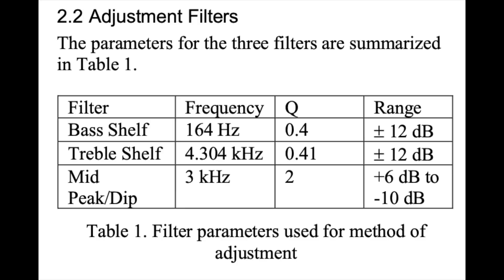The low shelf frequency is 164 hertz — pretty high — but the Q factor is extremely low. The treble shelf is at 4.3 kilohertz with a really low Q factor, and the mid-range peaking filter is at 3 kilohertz.